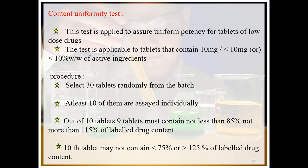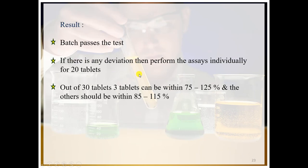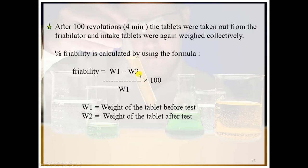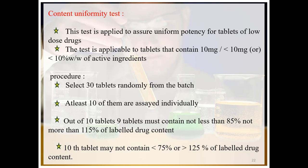The content uniformity test is applicable to tablets that contain 10 milligrams or less, or less than 10 percent weight by weight of the API — active pharmaceutical ingredient. This is a very simple procedure through which we can perform the content uniformity test.